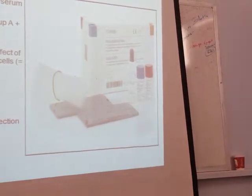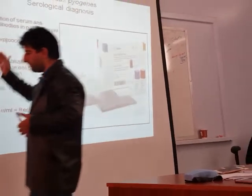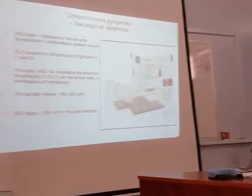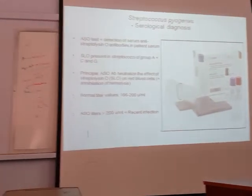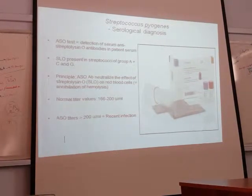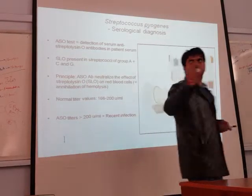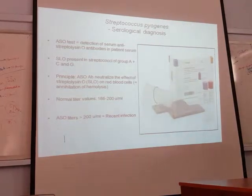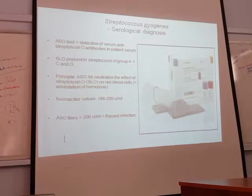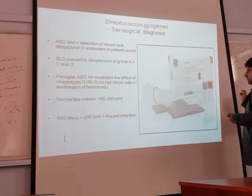ASO, Anti-Streptolysin O, causes hemolysis or RBC destruction. On the basis of this, you can confirm whether there is an infection — whether ASO antibodies or antigens are present in the blood. This is the basic concept of the test: if the patient has a pyogenic infection, the microbe is inside the body and produces Anti-Streptolysin O. When that antigen is produced, the body will react with an immunogenic reaction and produce an antibody.